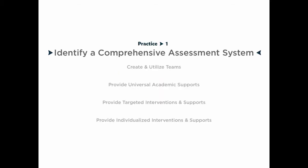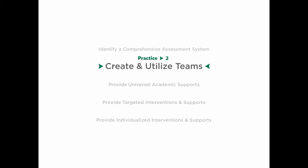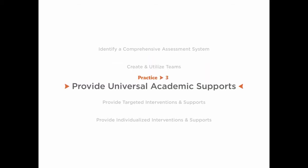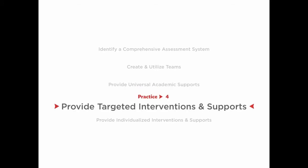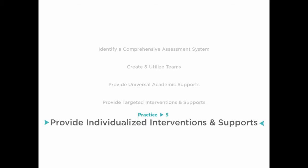Practice number one: identify a comprehensive assessment system. Practice number two: create and utilize teams to engage in data-based planning. Practice number three: provide universal academic supports for all students. Practice number four: create a system for providing targeted interventions and supports. Practice number five: create a process for providing individualized interventions and supports.